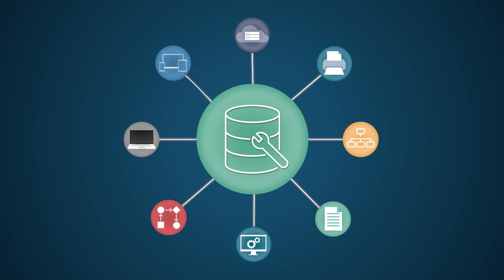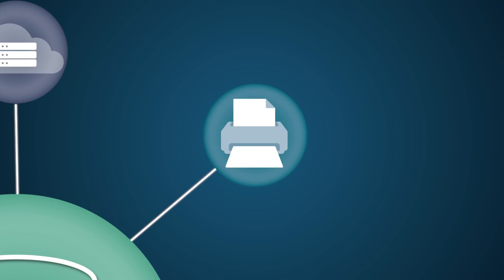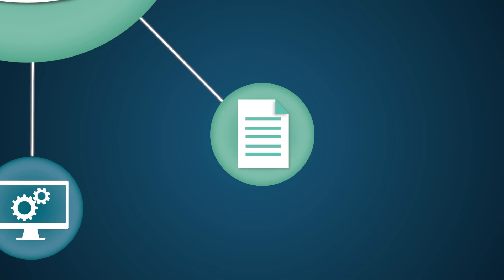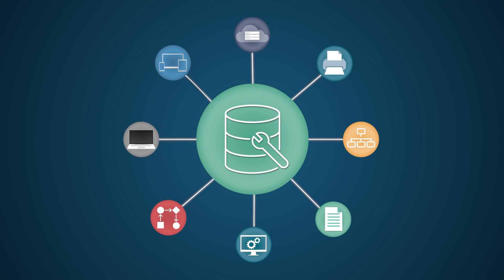A CI is a uniquely identified component used to deliver a service for which changes are controlled. A CI can be a physical entity, such as a server, or it can represent an operational construct, such as a cluster of servers. A CI could also be something logical, such as an application.